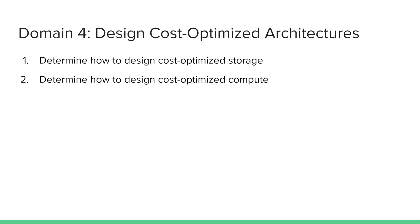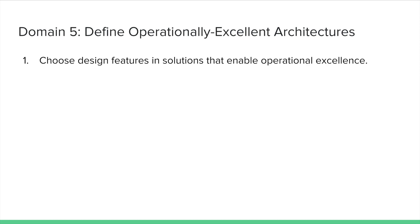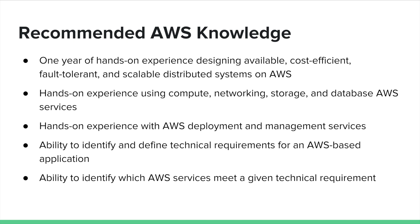Domain four is about how to design for cost optimization. You should know how to choose cost-optimized storage and cost-optimized compute. You should know about serverless computing and serverless architecture, and in what way serverless computing helps prevent idle compute time in order to lower the cost of your application. Domain five is about designing operationally excellent applications. These are the five main domains and the areas that you will be tested upon.